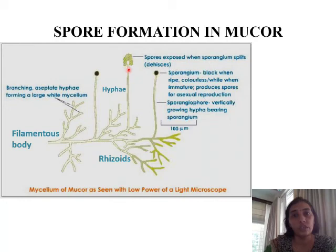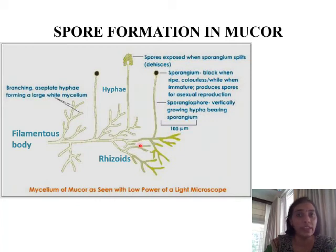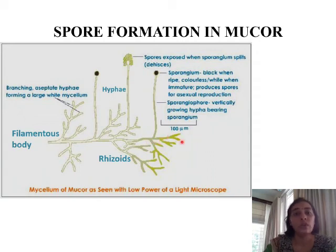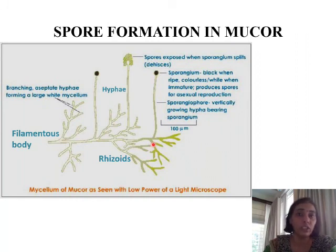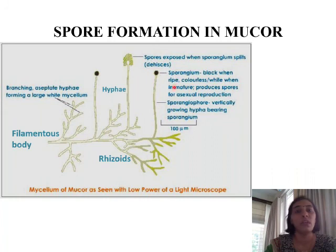When the sporangium is matured, it breaks open and bursts, releasing the spores. These spores fall down onto the same substratum — the food item on which the fungus is growing. More spores fall onto the same chapati or bread, and the fungus keeps expanding as it gets nutrition, warmth, and moisture. The spores germinate and give rise to more filaments, more hyphae, and more sporangia, which produce even more spores. With this we come to the end of asexual reproduction, and the next topic is sexual reproduction.